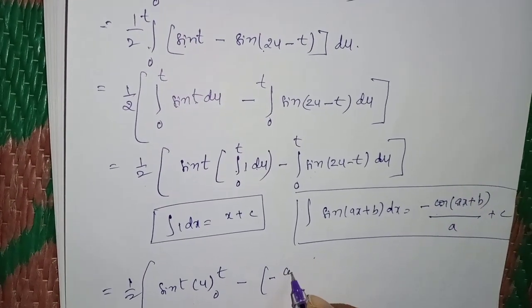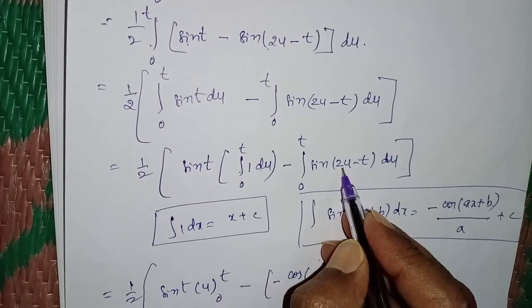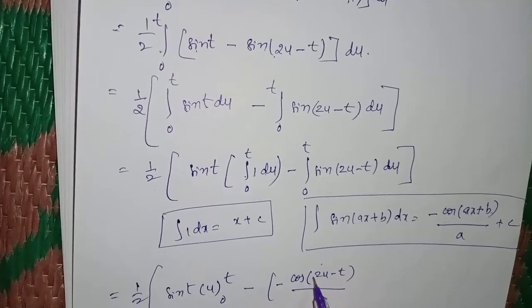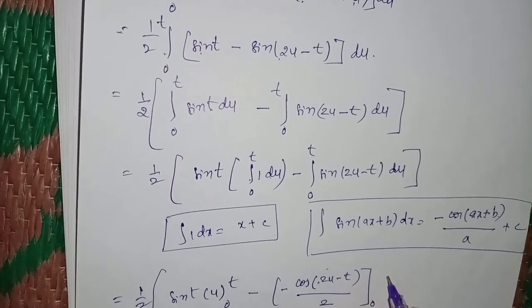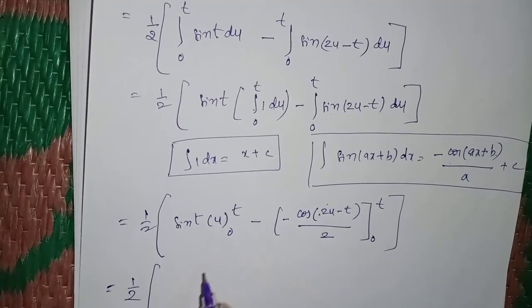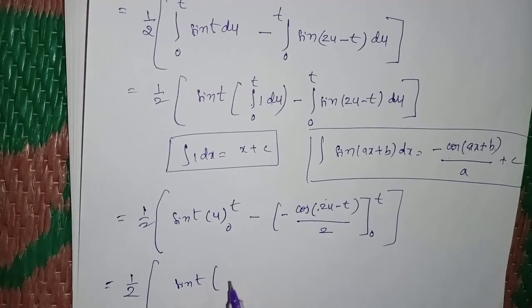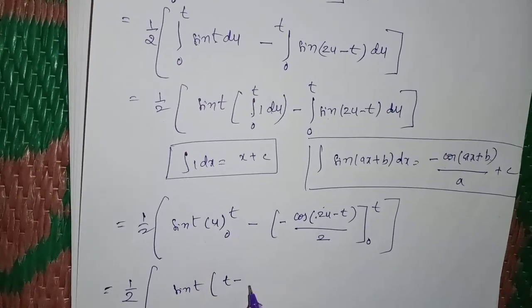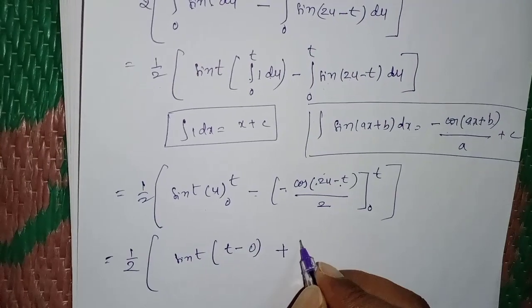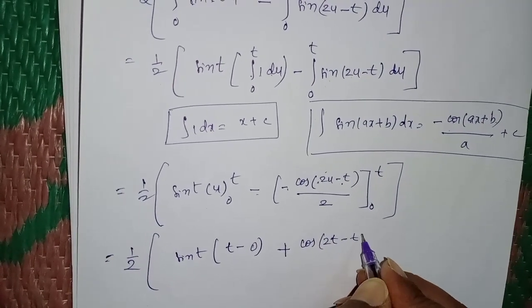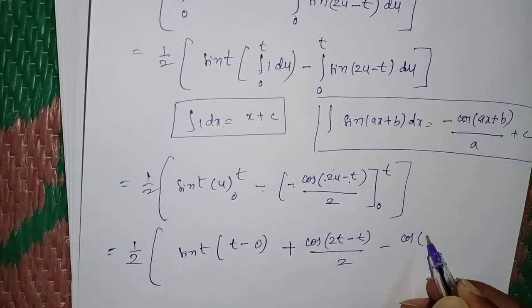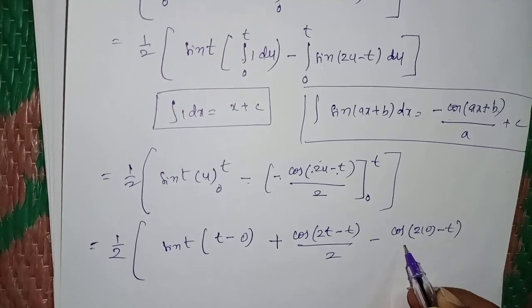Evaluating: (1/2)·[sin(t)·[u] from 0 to t − [−cos(2u−t)/2] from 0 to t]. This gives (1/2)·[sin(t)·(t−0) + (1/2)·(cos(2t−t) − cos(2·0−t))]. Simplifying: cos(2t−t) = cos(t) and cos(−t) = cos(t).